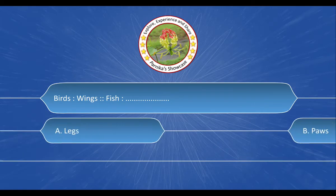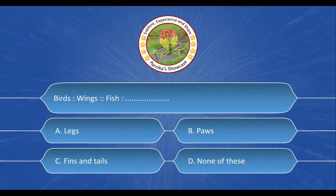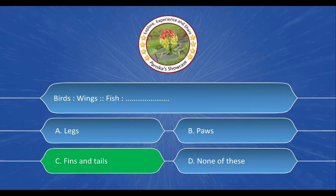Next question: bird have wings; fish have dash dash. The options are: a) legs, b) paws, c) fins and tails, d) none of these. The correct answer is option c) fins and tails.